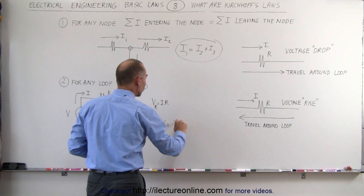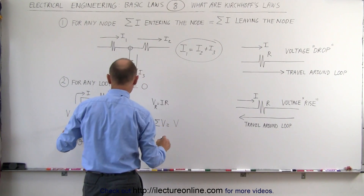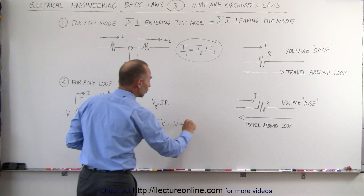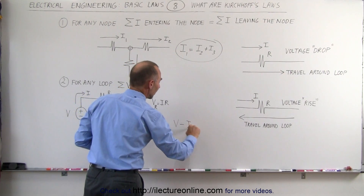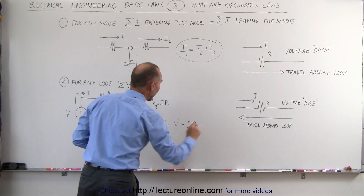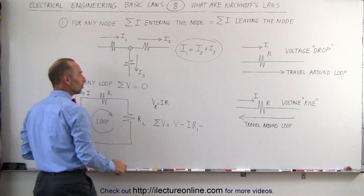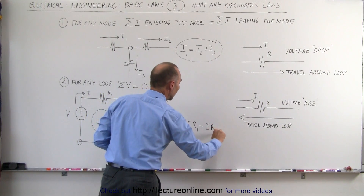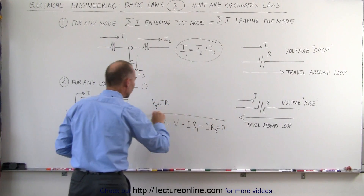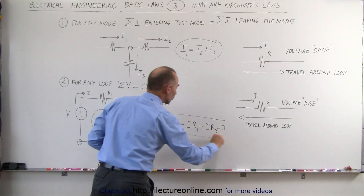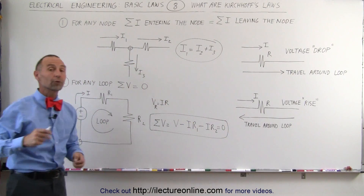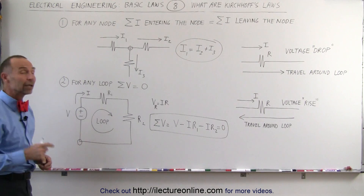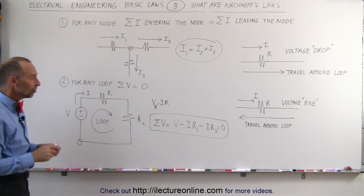So the sum of all the voltages, starting from this node, equals the volts across the source, minus the voltage drop across the first resistor, which is I times R1, minus the voltage drop across the second resistor, which is I times R2, and that must add up to zero — because Kirchhoff's rule says you add up all the voltages as you travel around any closed loop, and they must always add up to zero.